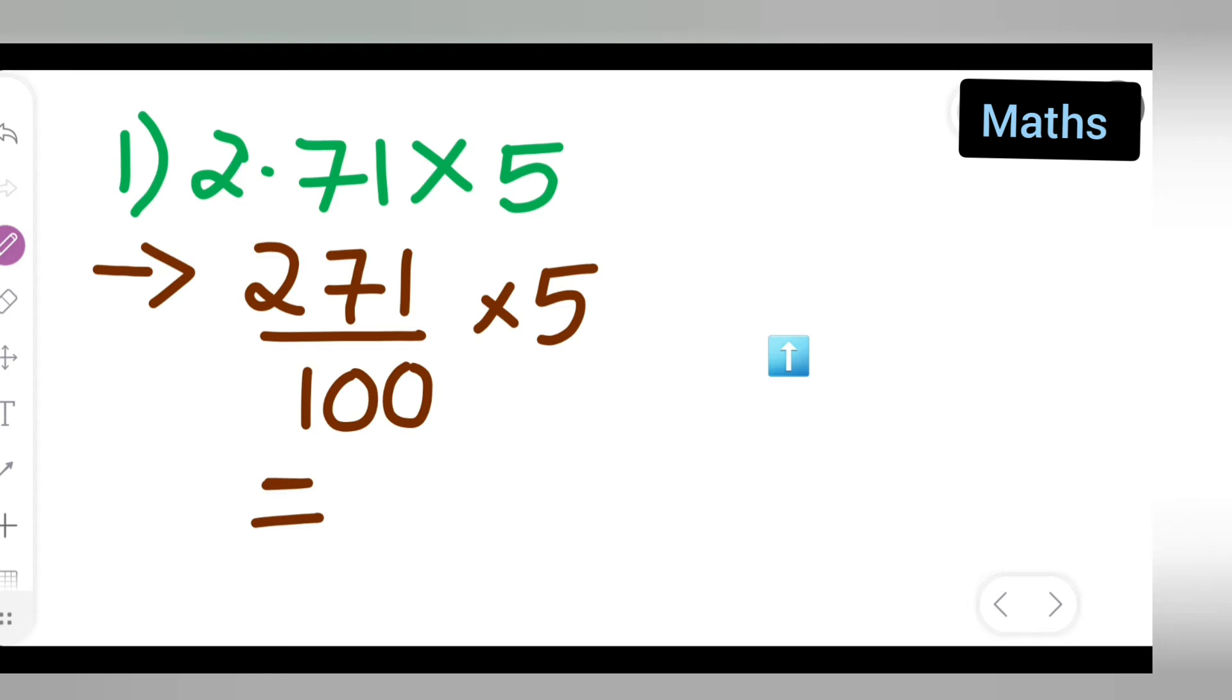This is equal to 271 multiplied by 5 upon 100. Now basically you'll need to multiply this.